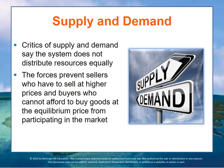So we ask ourselves: is this a fair process? Is this a reasonable way for a society to determine who gets what resources, who gets access to what resources? Certain critics of supply and demand say that the system doesn't really distribute resources equally — if you have more assets, you get more stuff. The forces of supply and demand prevent sellers who have to sell at a higher price because their costs are high from getting into the marketplace, and buyers who don't have enough money can't afford to buy goods at the equilibrium price, so they're not participating in the market.